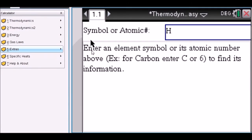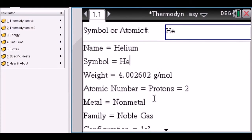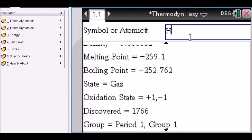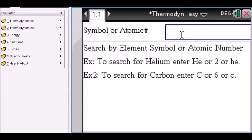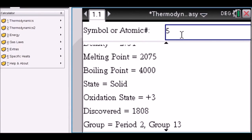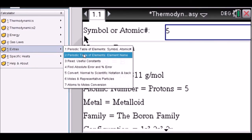Extras. Here's the table of elements. Enter a symbol name, say HE. Helium. Get all the information about helium. Change it to H. Hydrogen. Or you can also search it by atomic number, 5 boron.